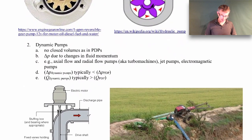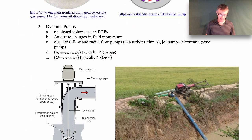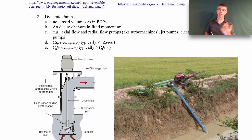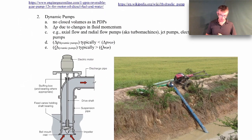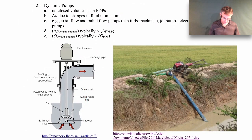Instead we'll focus primarily on dynamic pumps. A centrifugal pump is an example — dynamic pumps rely on changes in fluid momentum to produce the pressure rise. You spin the fluid up to high speed with a lot of kinetic energy and momentum, and that gets converted into pressure as it slows. There are no closed volumes in dynamic pumps as there were in positive displacement pumps. Examples of dynamic pumps include axial flow and radial flow pumps. A radial flow pump is the centrifugal pump; an axial flow pump has flow going in the same direction throughout.